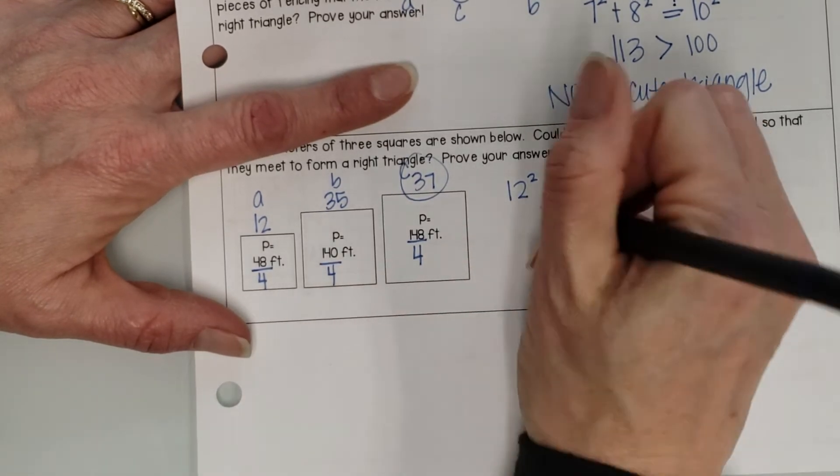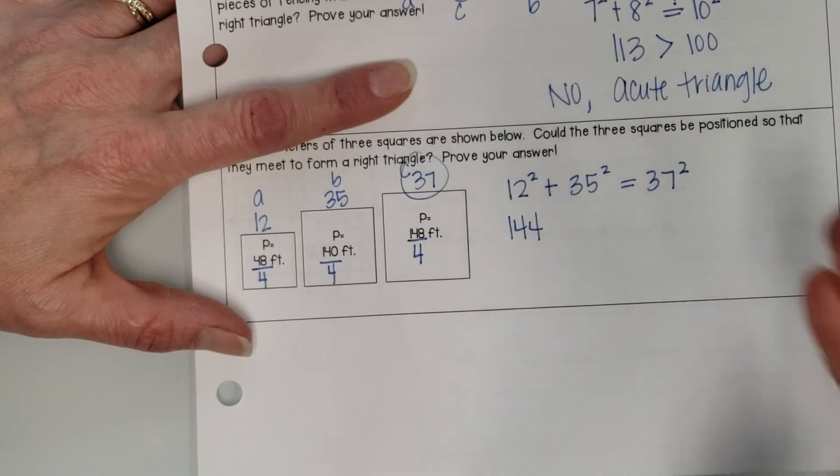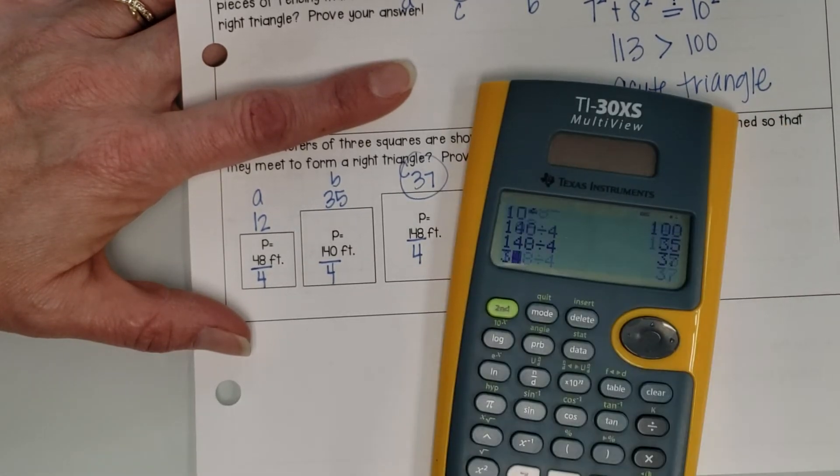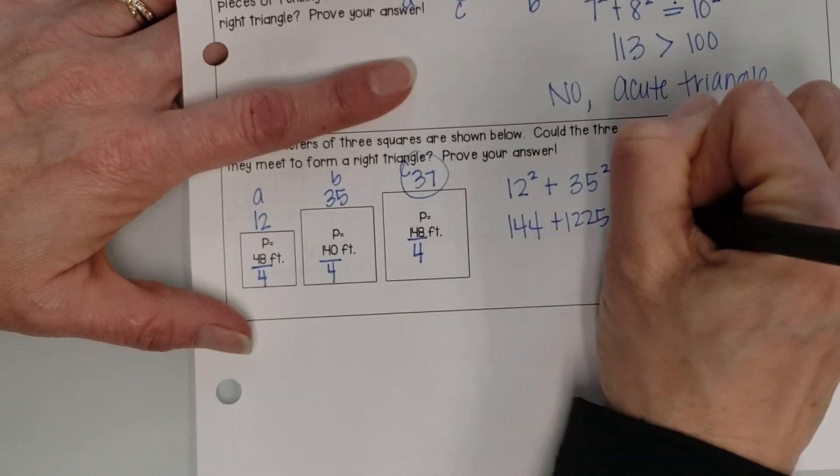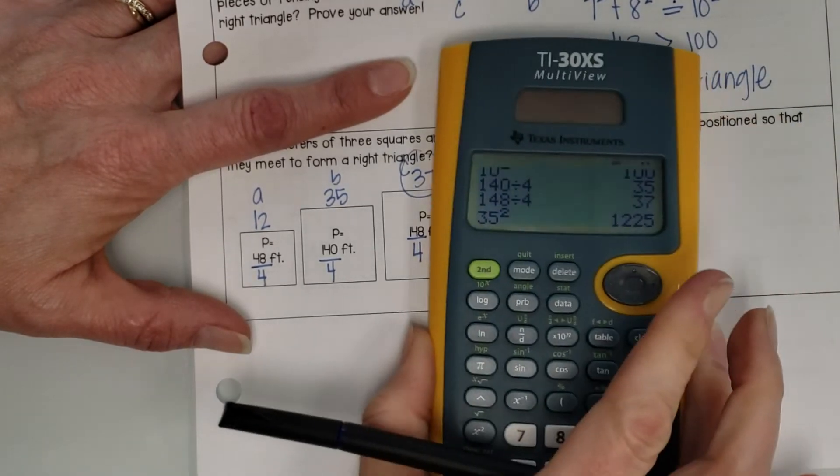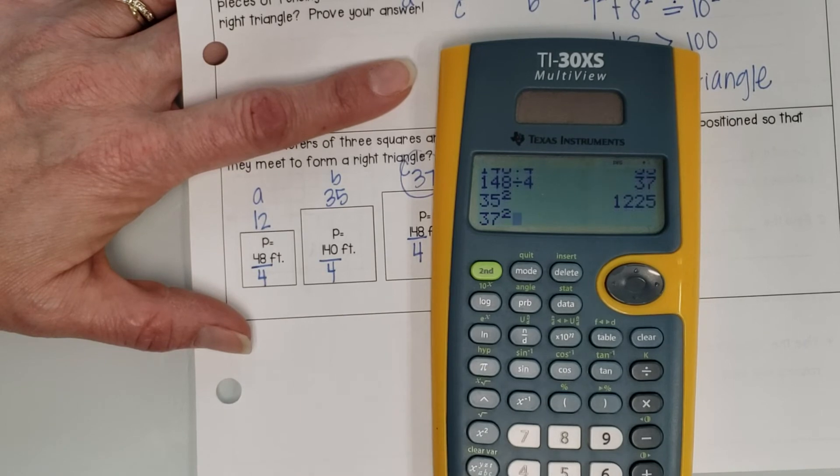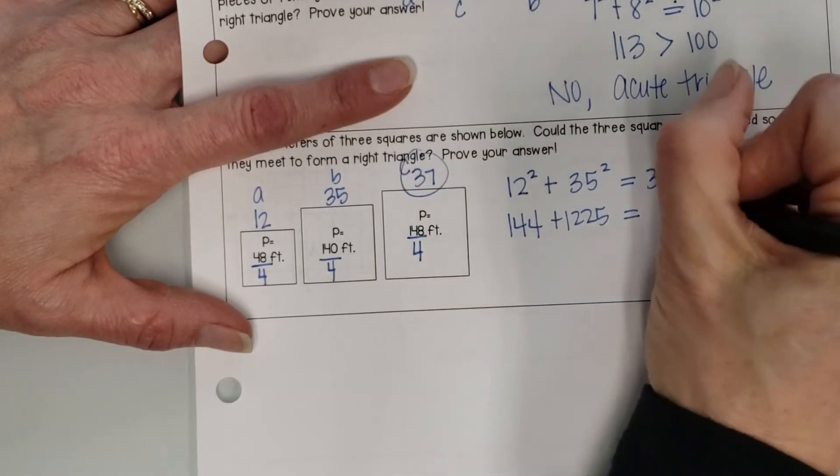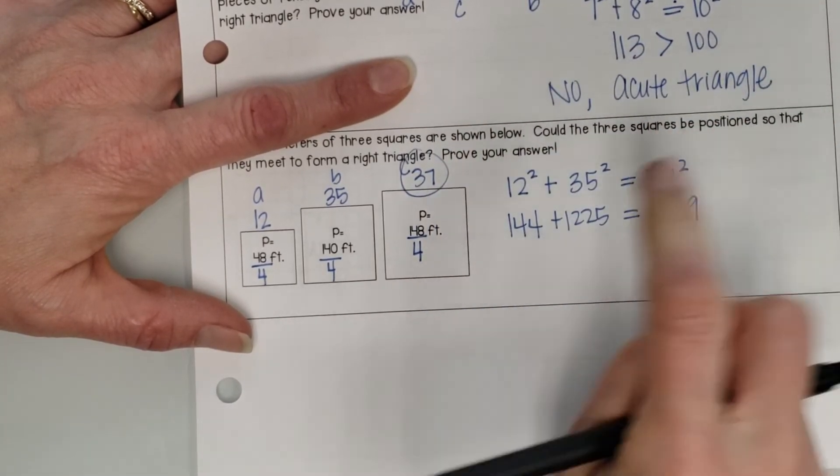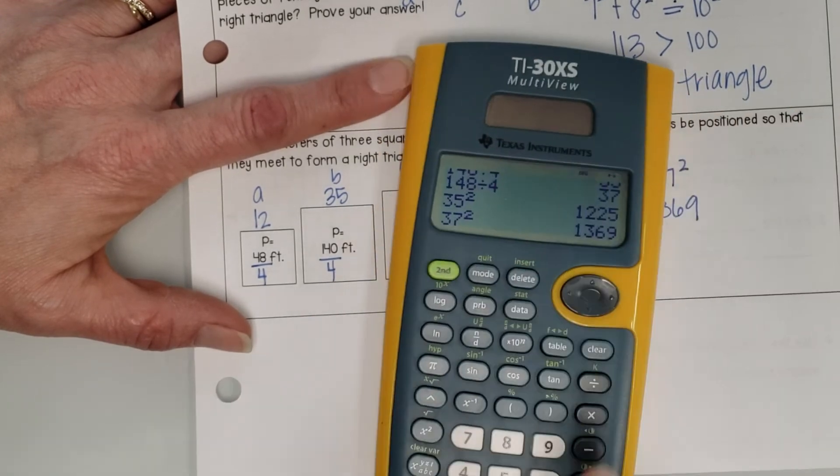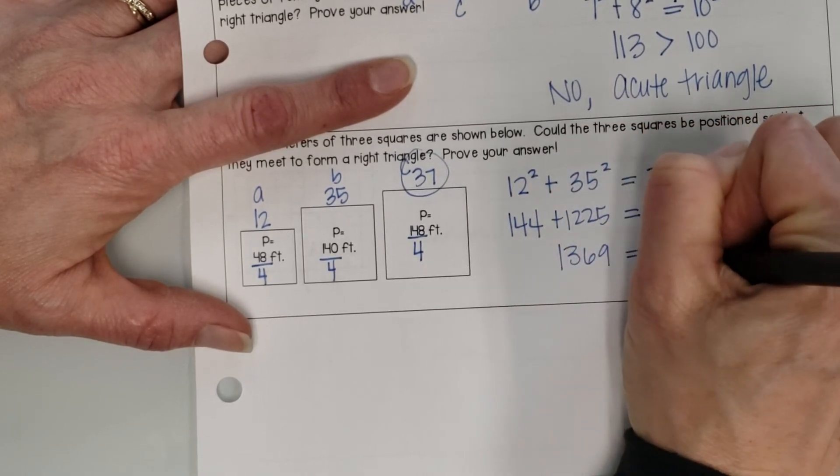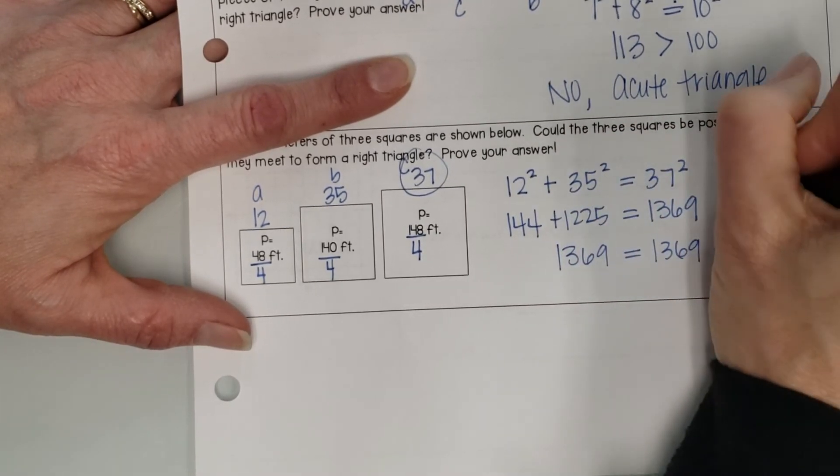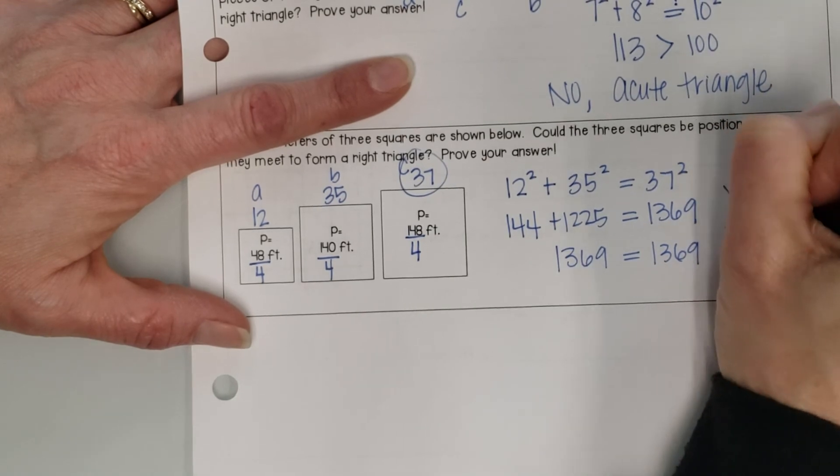So 12 squared is 144. Oh, I just could have just done this in my calculator like I did before. 35 squared is 1225, sorry. 37 squared is 1369. These two added together is 1369. So 1369 equals 1369. So yes, they would make a right triangle.